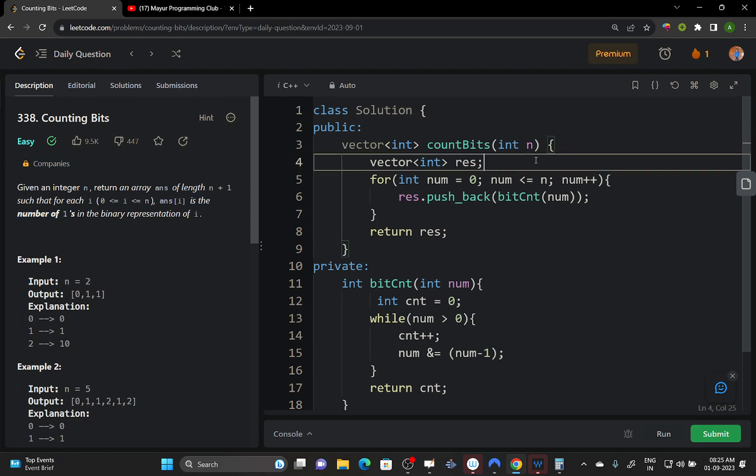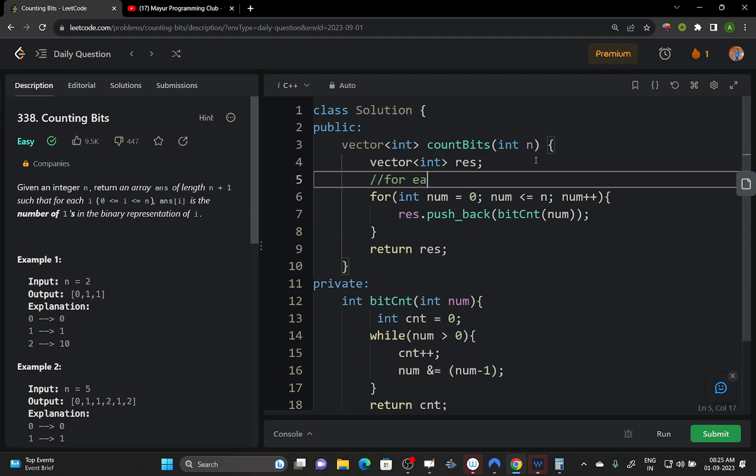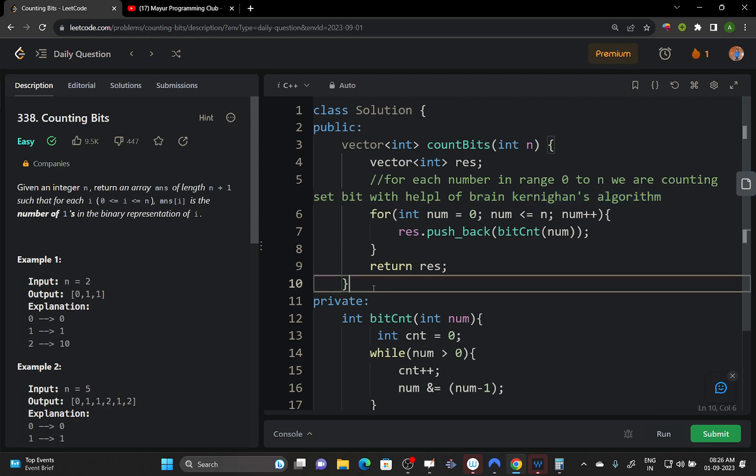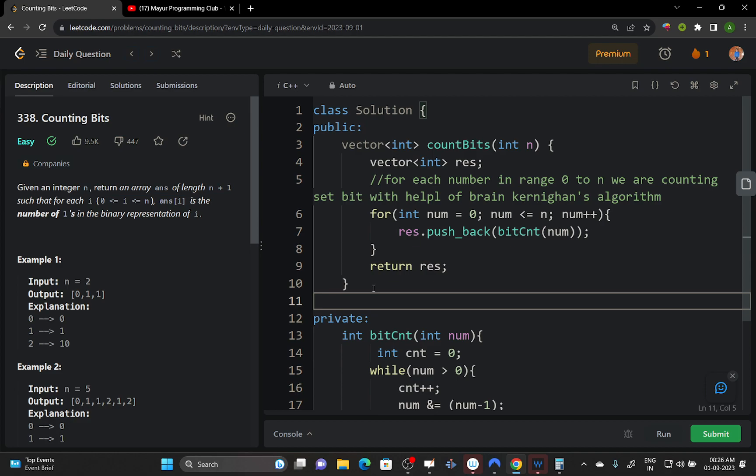So this is the code. For each number in range 0 to n plus 1, 0 to n, we are counting set bits. And this is Brian's algorithm. Pardon me if I am misspelling his name. I hope it does not affect your understanding of the algorithm.